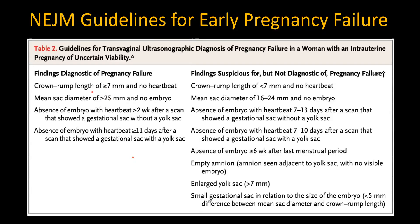This NEJM article is very important when you have to decide if this is early pregnancy failure. The criteria that are diagnostic of early pregnancy failure are a crown-rump length of more than seven millimeters without a heartbeat, and a mean sac diameter of more than or equal to 25 millimeters without an embryo — essentially a large, empty gestational sac. If you see anything else, suggest a follow-up after two weeks, because that will cover both these criteria.